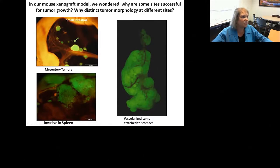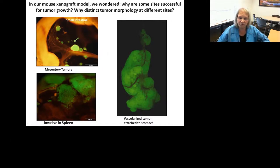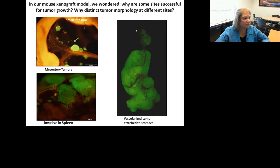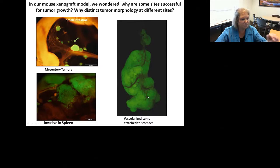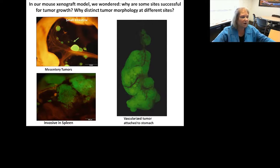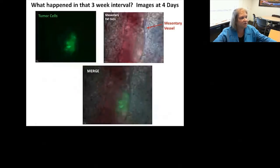The first question we asked was why there was such different morphology when tumors landed in these various sites. Every place the tumors land, they have the opportunity to take on a different shape. Here in this mesentery you can see a small tumor; here's an invasive sponge-like penetration of the spleen; and here's a very large tumor grown out into the peritoneal space — only three weeks of growth and it's fully vascularized.